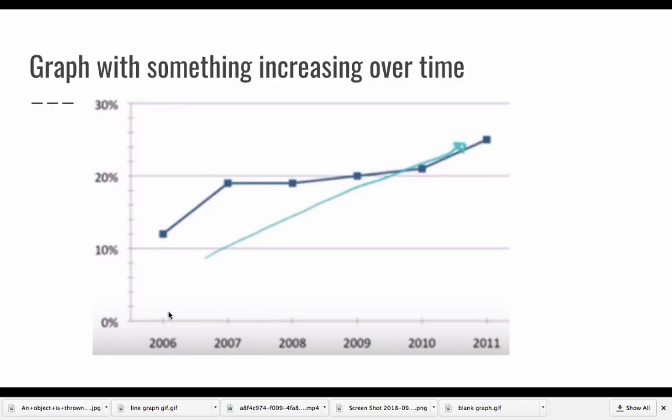If something increases over time and your time is on the x-axis, your graph is going to be slanted upwards. So it's going to start lower on the left hand side and then get higher on the right hand side.